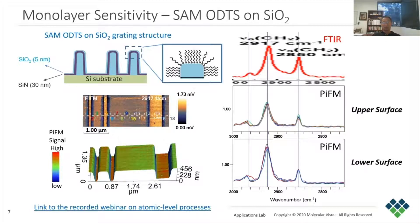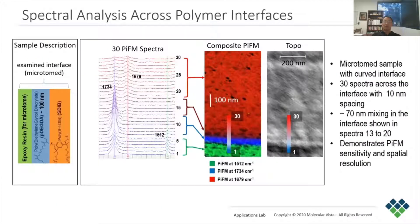Those interested to learn more can access the recorded webinar on nanoscale analysis of advanced patterning processes using the link provided. Here we have a cross-section sample that contains polymer interfaces. The colored image in the middle is a composite chemical map combining three PIFM images taken at wavenumbers associated with the strong IR peaks for three different materials. In the composite image, there is a relatively sharp transition from epoxy to PDEGDA, colored green and blue respectively.